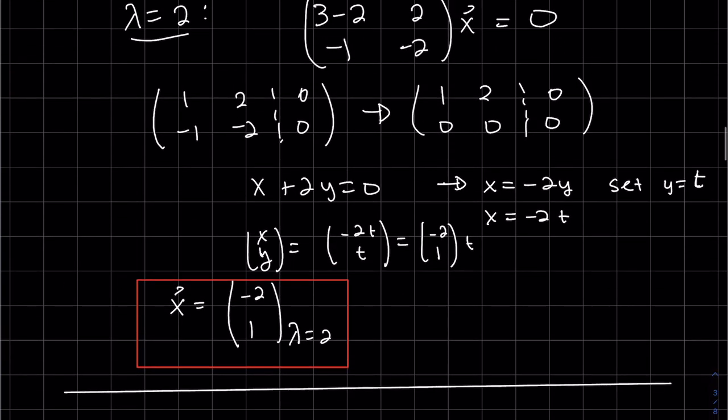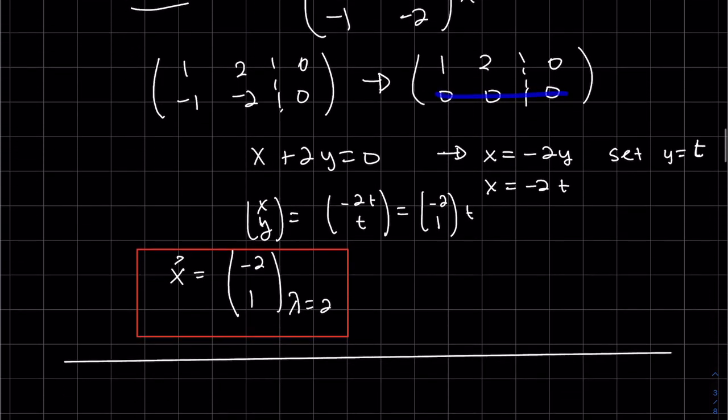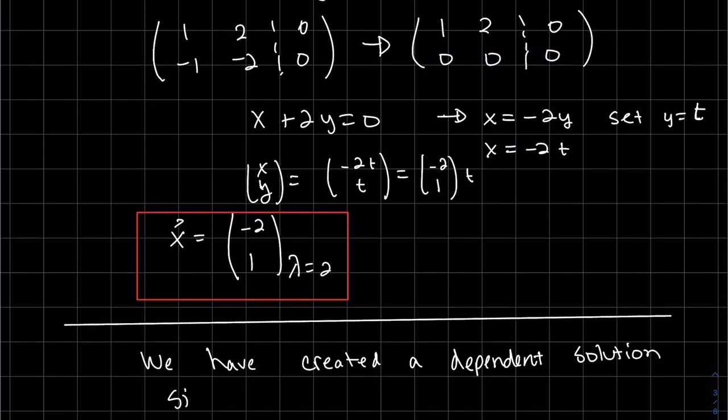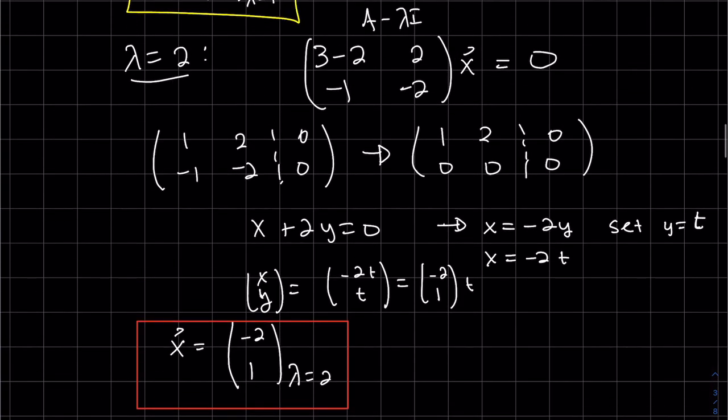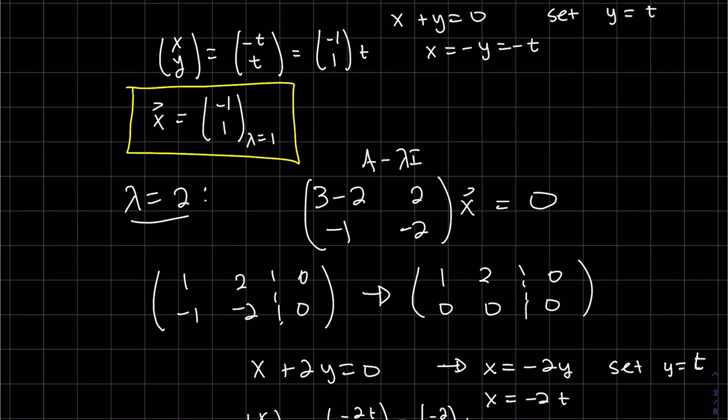Just to note on this dependent system that we just created, and the reason is we're using that determinant is zero. That's how we built it. We built the system that it's dependent. So that's kind of a check when you're finding the eigenvectors. If you don't get a row of zeros, something went wrong.